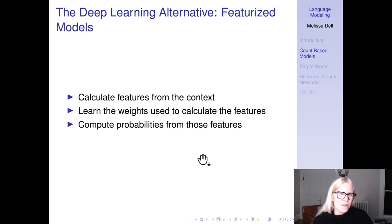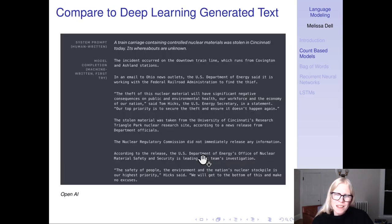The deep learning alternative: you calculate features from the context, you learn the weights used to calculate the features with deep learning, and then you can compute probabilities from those features. This is an example of text generated with a neural language model - I think this is actually GPT-2, which by this point has been left behind by GPT-3 and ChatGPT - but it's still pretty good. It's definitely coherent, unlike the n-gram generated text.